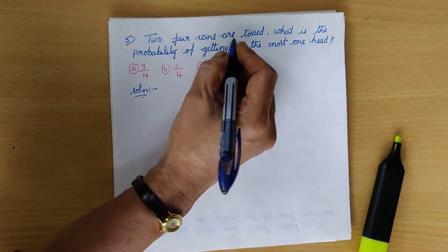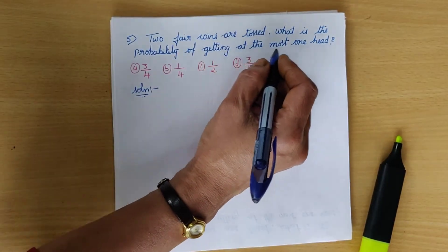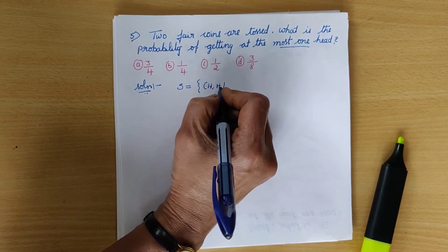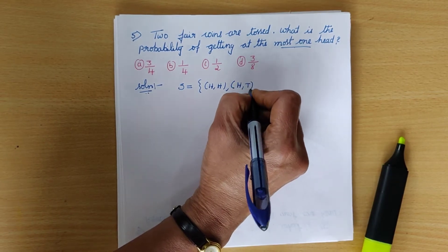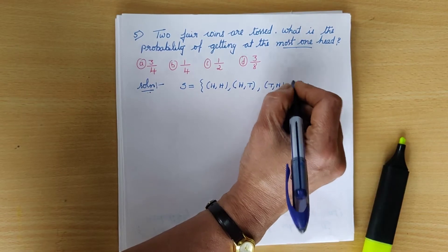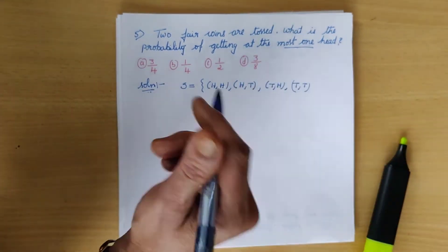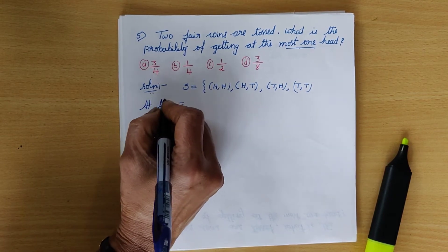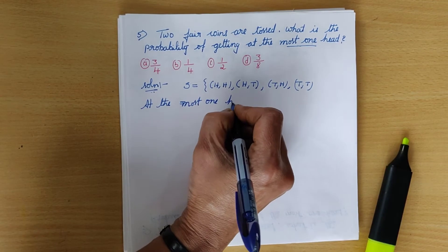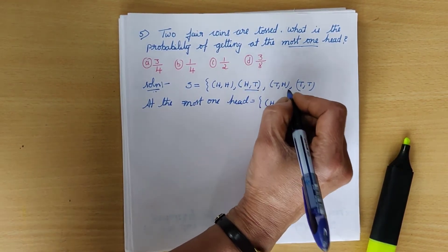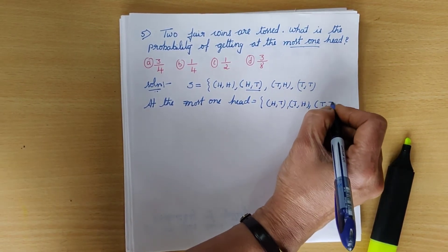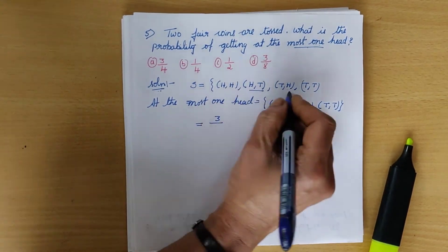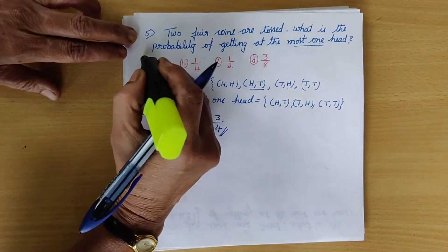Fifth question: two fair coins are tossed. What is the probability of getting at most one head? The sample space is {HH, HT, TH, TT}. At most one head includes HT, TH, and TT — that's 3 outcomes. So the probability is 3/4. The correct option is A.